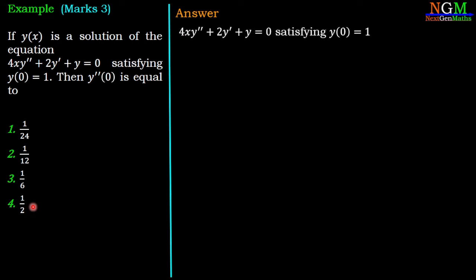Solution: We have the given differential equation 4xy'' + 2y' + y = 0, satisfying initial condition y(0) = 1. Now, y(0) = 1 means y = 1 when x = 0.